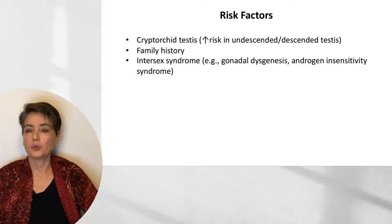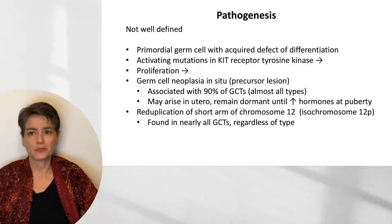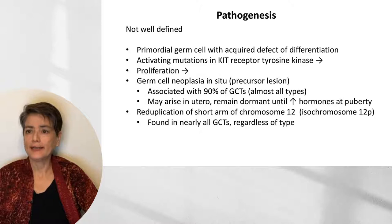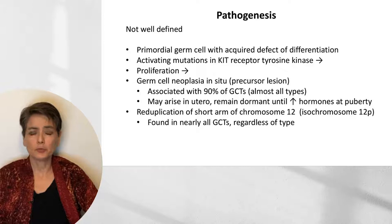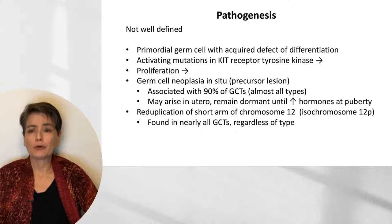The pathogenesis of germ cell tumors is not well defined. What we believe happens is that we have a primordial germ cell with an acquired defect of differentiation. We get an activating mutation in the KIT receptor tyrosine kinase that leads to proliferation. We can have a germ cell neoplasia in situ as our precursor lesion, associated with about 90% of germ cell tumors of almost all types, and we will typically find this adjacent to a focus of actual germ cell malignancy. It is thought that germ cell neoplasia in situ may arise in utero and remain dormant until a hormone surge at puberty.